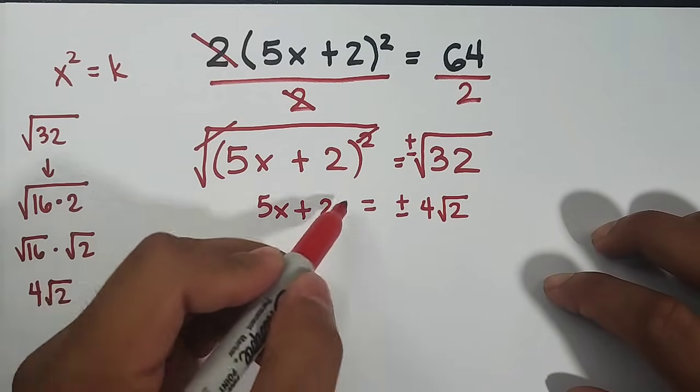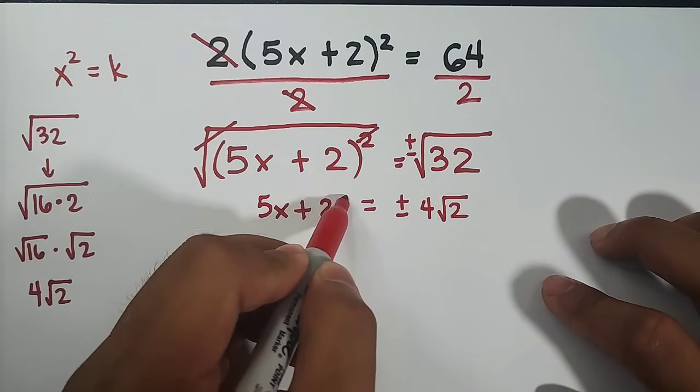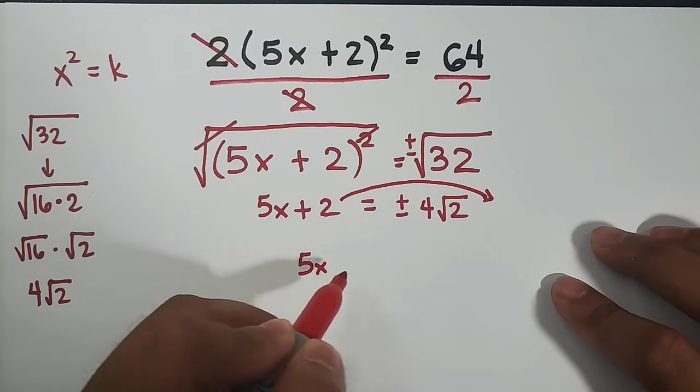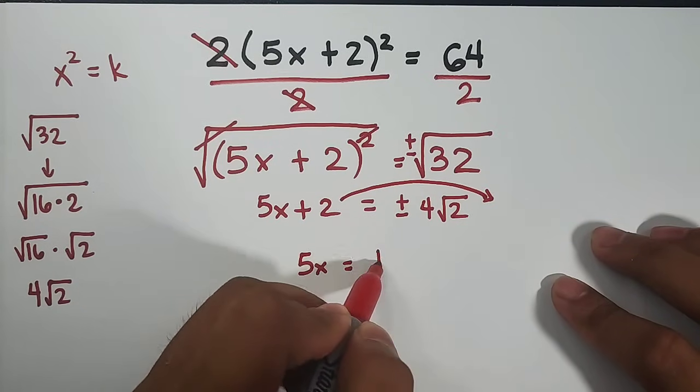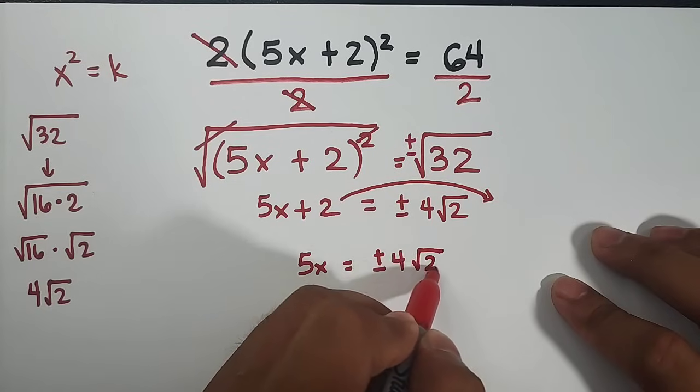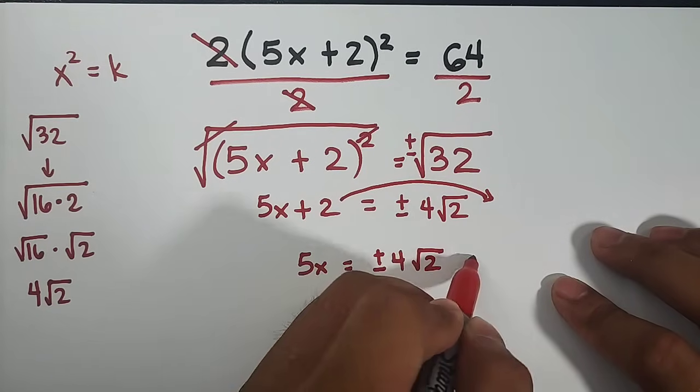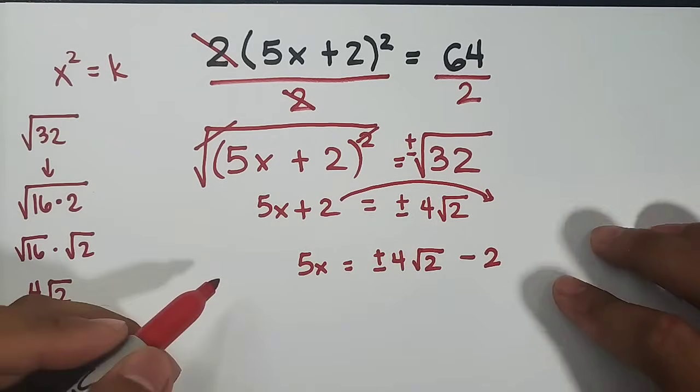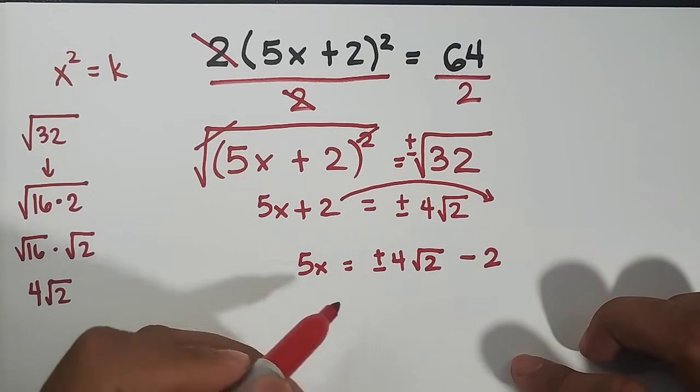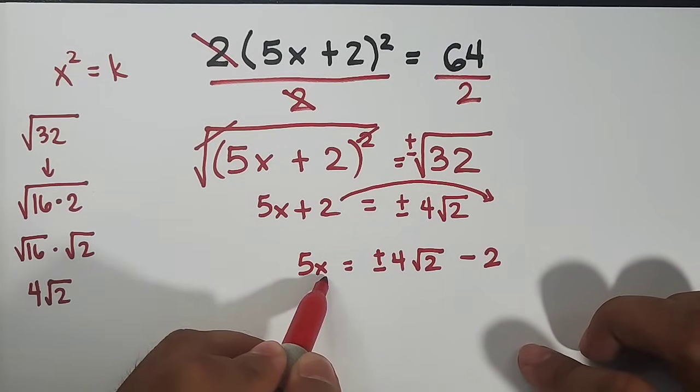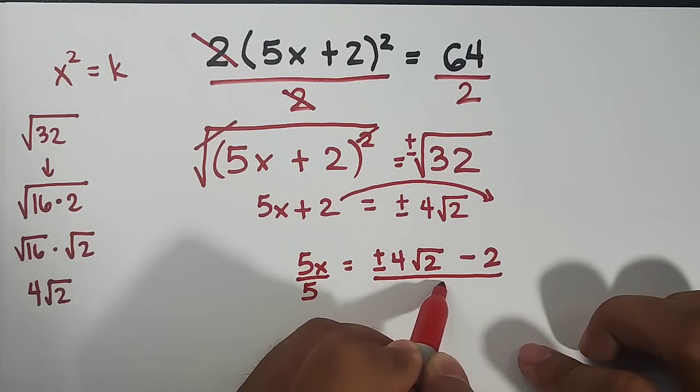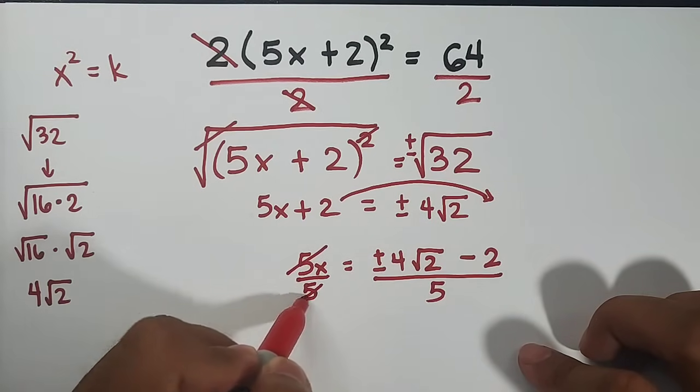So after this, we will transpose 2 to the other side of the equation and it will become 5x is equal to the positive, negative 4, square root of 2 and then this will become negative 2. But in this case, we're not yet done guys. We still have this 5 as the coefficient of x, meaning we need to divide both sides of the equation by 5, divide by 5, cancel, cancel.